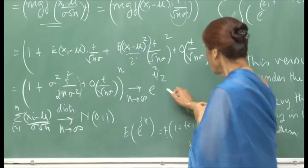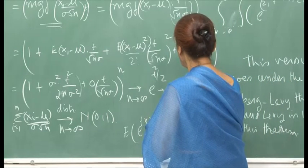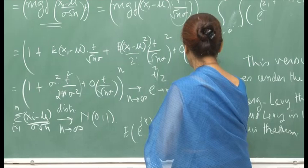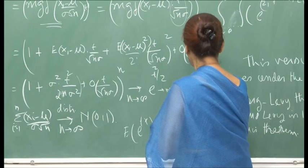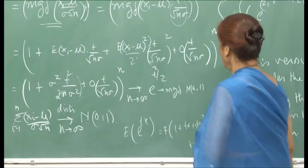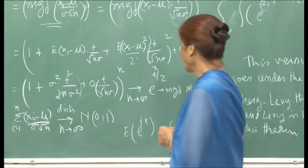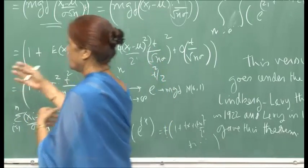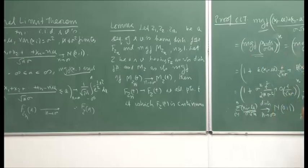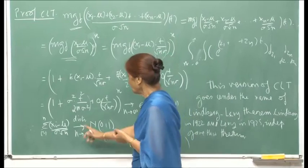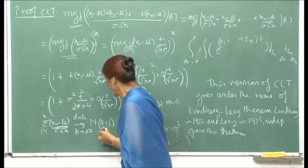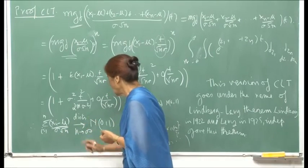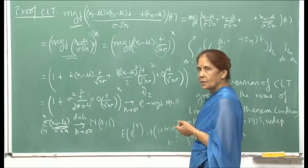The limit e^{t^2/2} is exactly the MGF of a standard normal variate N(0,1). So we have shown that the MGF of the standardized sum — sigma(x_i - n*mu) / (sqrt(n)*sigma) — converges to the MGF of a standard normal variate. Therefore, by the lemma, this random variable converges to N(0,1) in distribution as n goes to infinity.